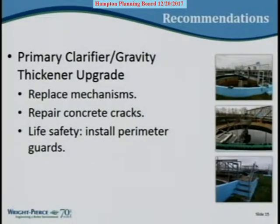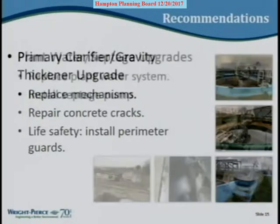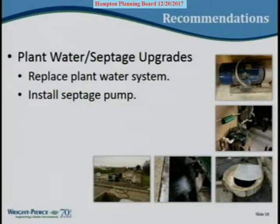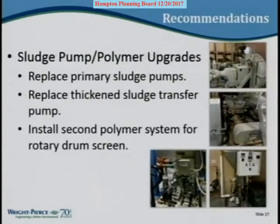The primary clarifier and thickener upgrades involve replacing old mechanisms, doing concrete repair, and adding safety railings not currently present. The plant water system reuses treated effluent pumped back for on-site washdown and the dewatering process, rather than using water from the aquifer - but those pumps are also in rough shape and need replacement.